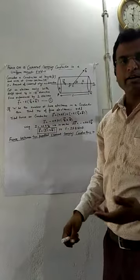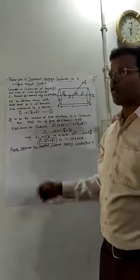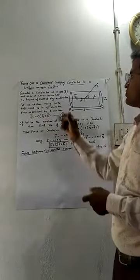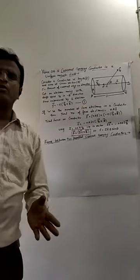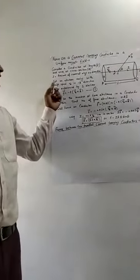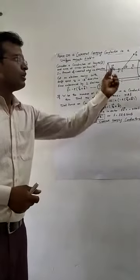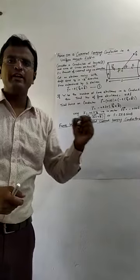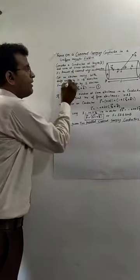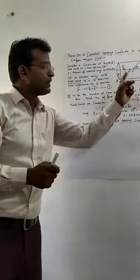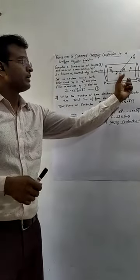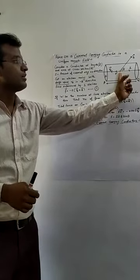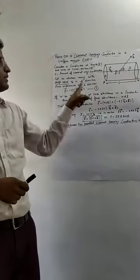We consider a conductor of length L and cross-section area A, with current I flowing in the positive x-axis direction. We know that a conductor has a large number of free electrons. Let a single electron move with drift speed Vd. The direction of electron motion is always opposite to the direction of flow of electric current, so the electron moves in the negative x-axis direction.